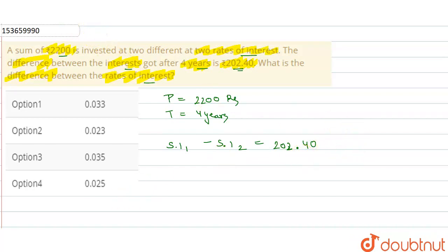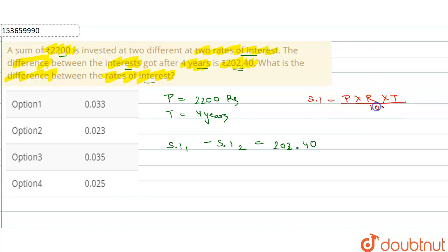Now, how do we calculate Simple Interest? The formula for Simple Interest is: Principal into Rate of Interest into Time, divided by 100. This is our formula.